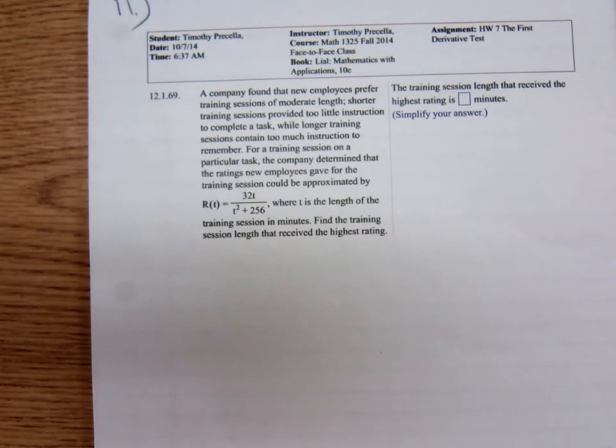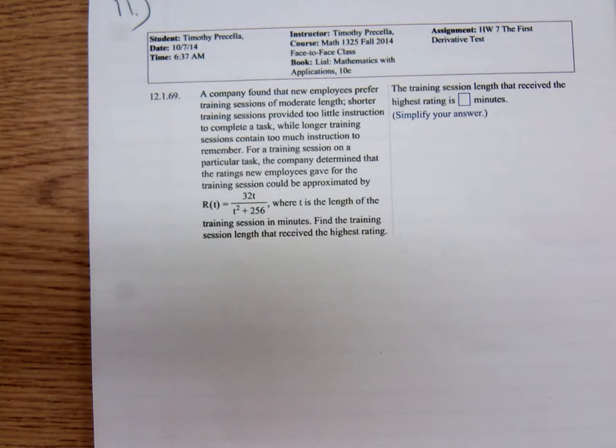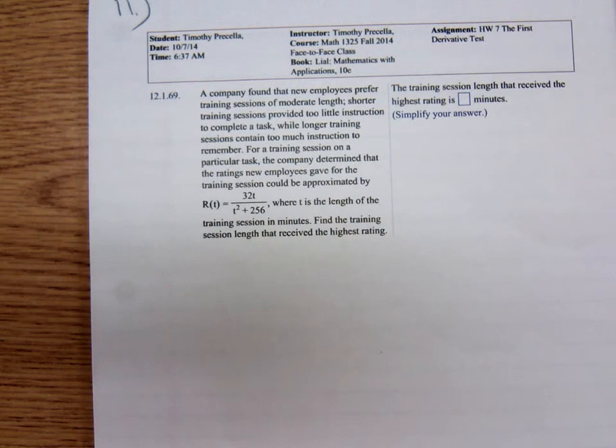For a training session on a particular task, the company determined that the ratings new employees gave for the training session could be approximated by R(t) = 32t / (t² + 256), where t is the length of the training session in minutes. They want us to find the training session length that received the highest rating. So we're hoping we find a maximum here.